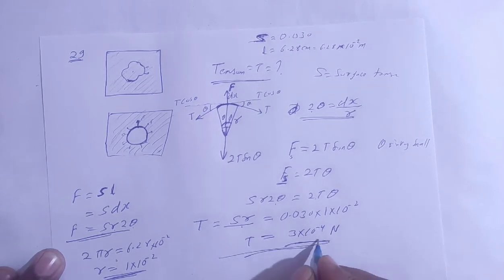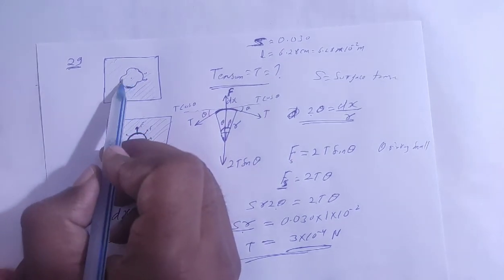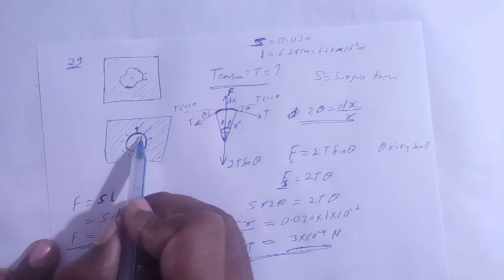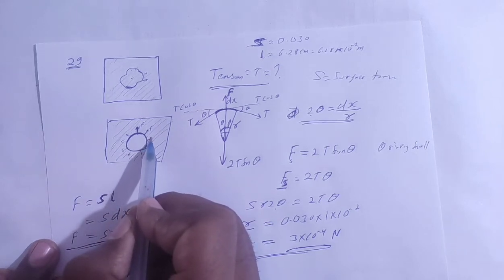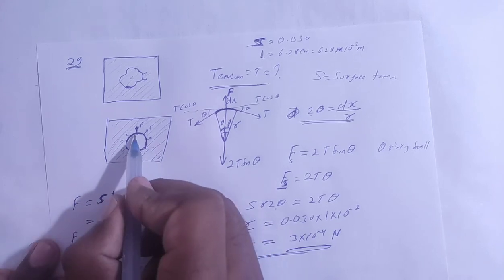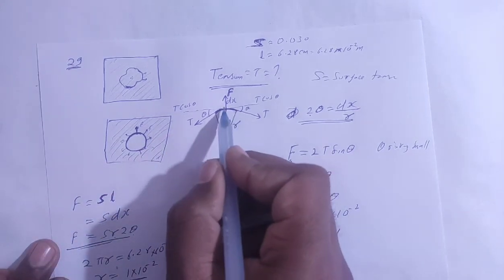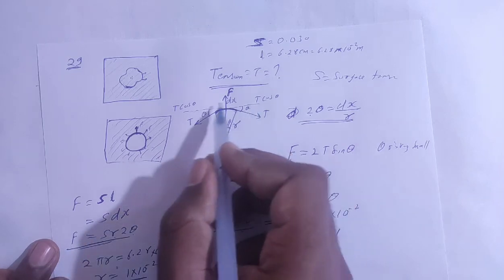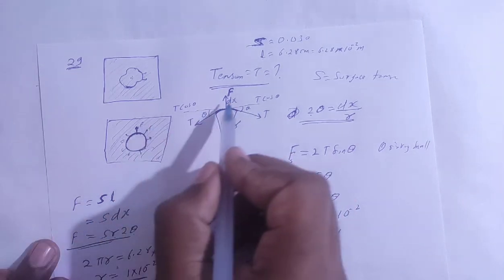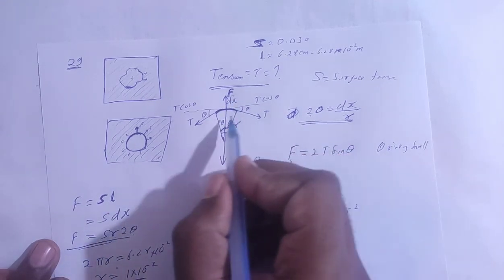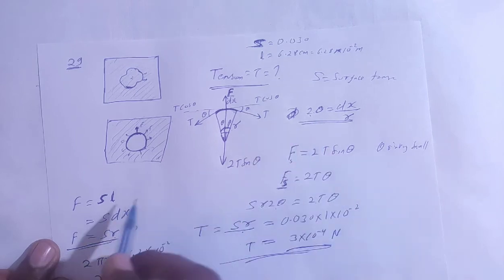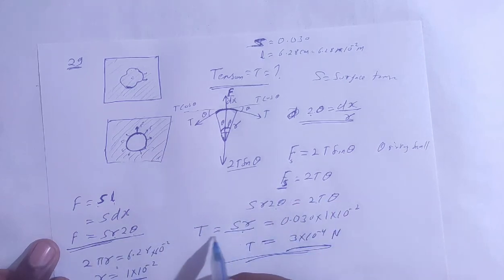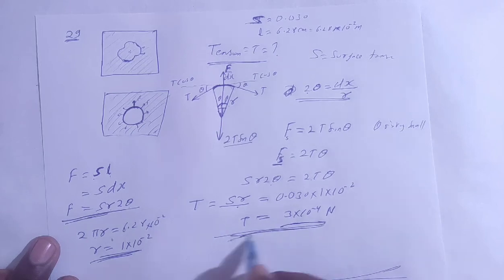So the tension developed in the thread is 3 × 10⁻⁴ N. To summarize: we placed the thread loop on the membrane, and when the inner membrane was broken, the thread took a circular shape — because the surface tension force compelled it into a circular shape. We took a small element of length dx with angle 2θ, applied tension in both directions, the horizontal components cancelled, and the radial component was balanced by the surface tension force. Setting 2Tθ = S × r × 2θ, we found T = Sr = 3 × 10⁻⁴ N.